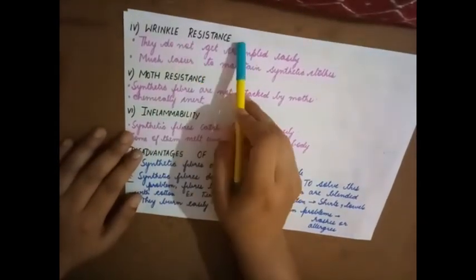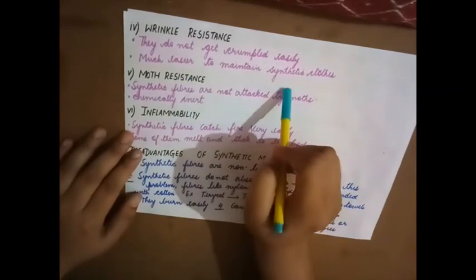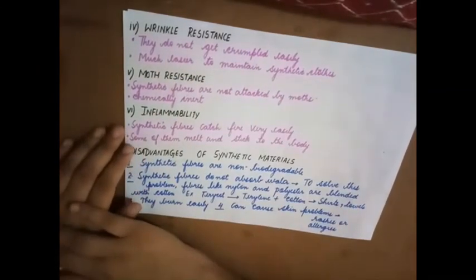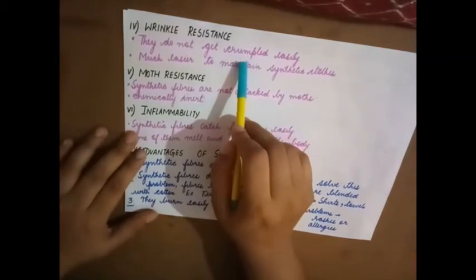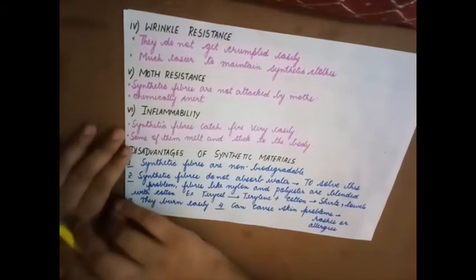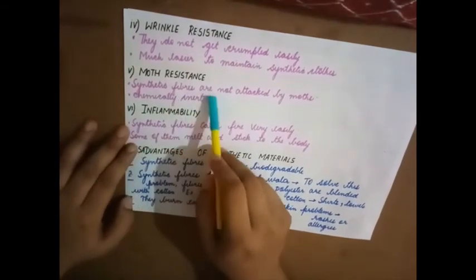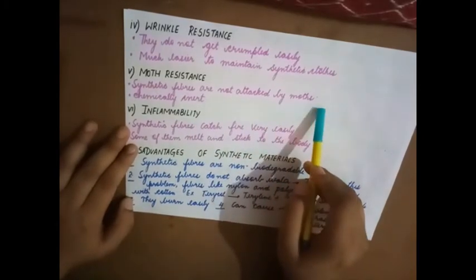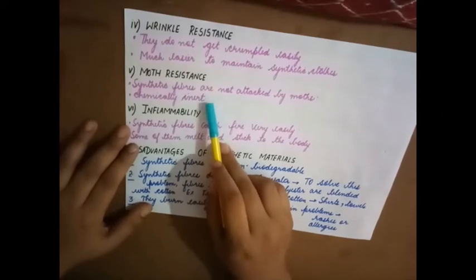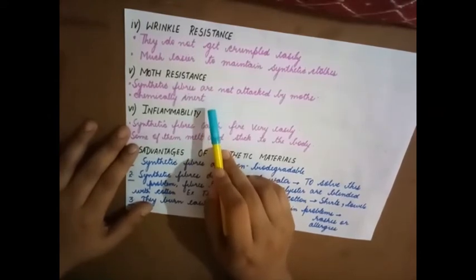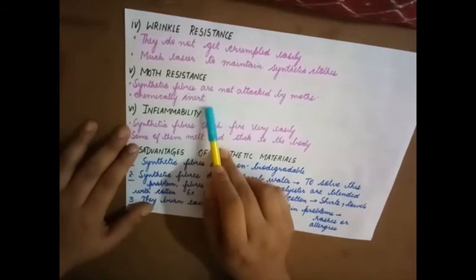Wrinkle resistance: They do not get crumbled easily, much easier to maintain when compared to synthetic clothes. So here we do not require much ironing or much maintenance. Moth resistant: Moth is an insect, so synthetic fibers are not attacked by moths. They are chemically inert, it means there is no chemical reaction taking place. So inert means it is not reactive.